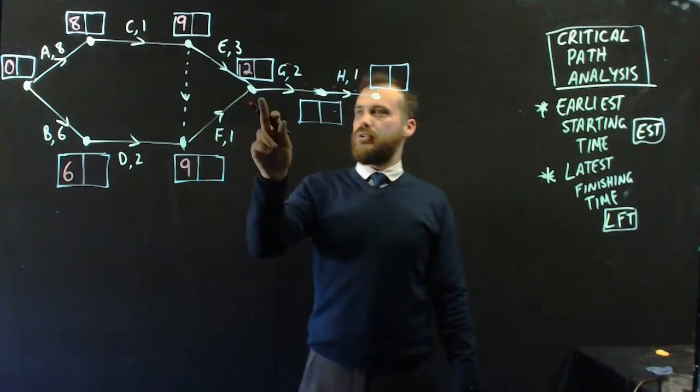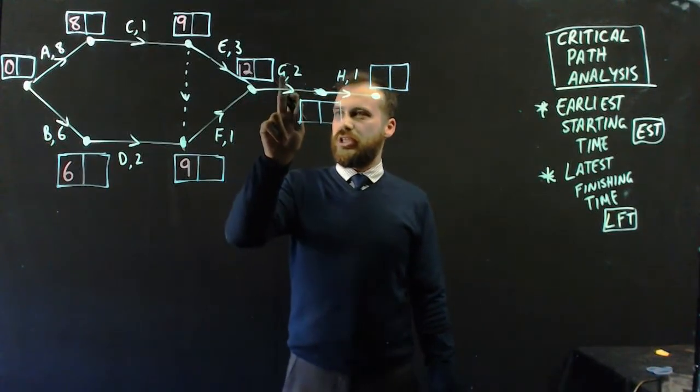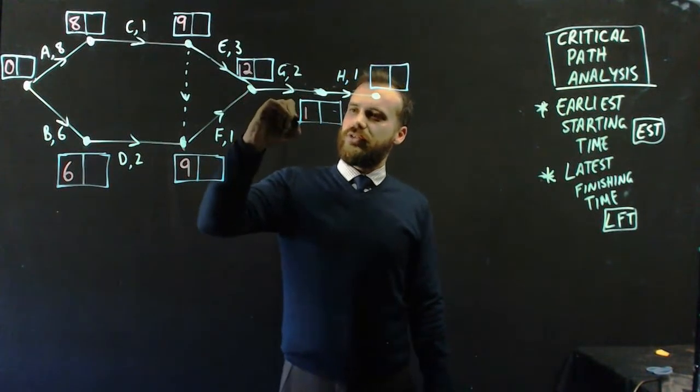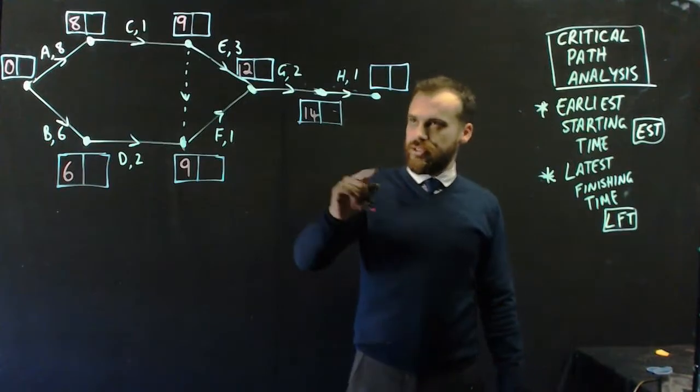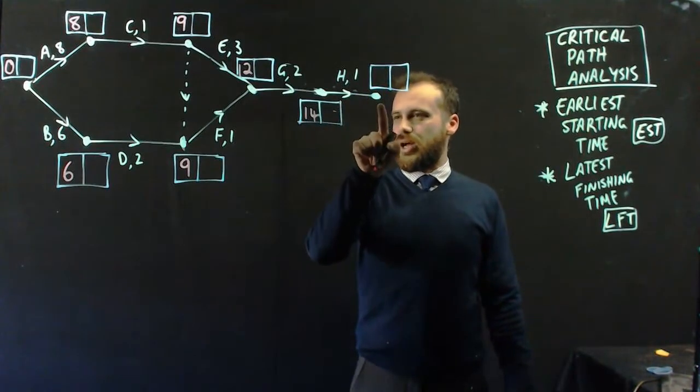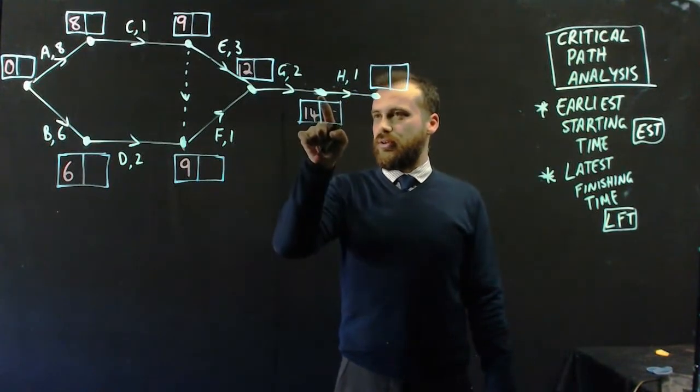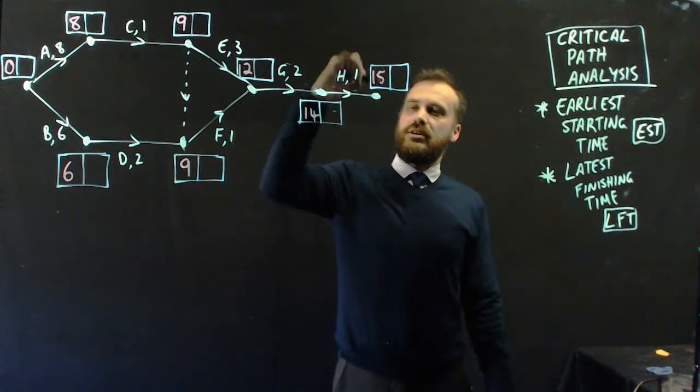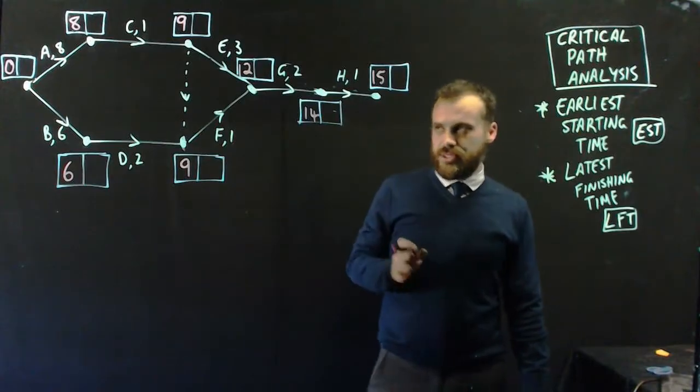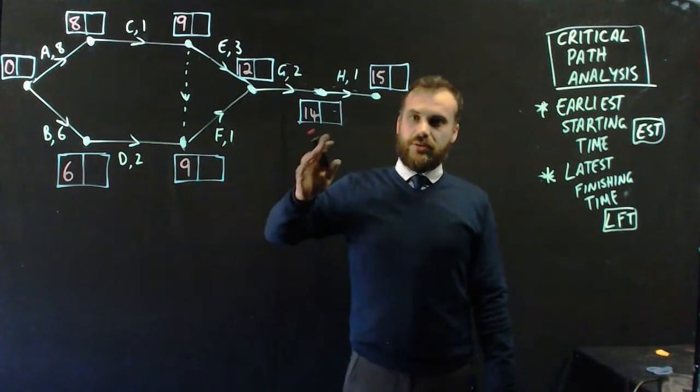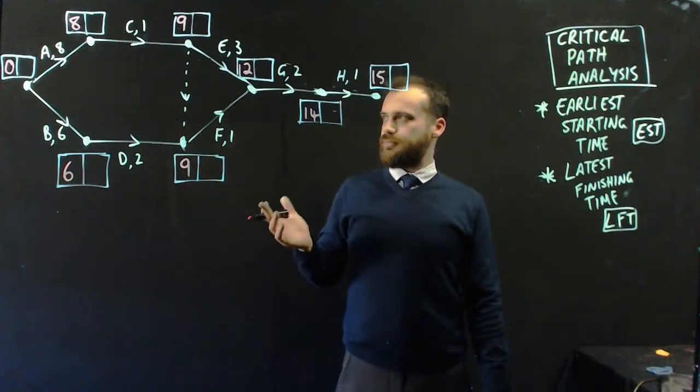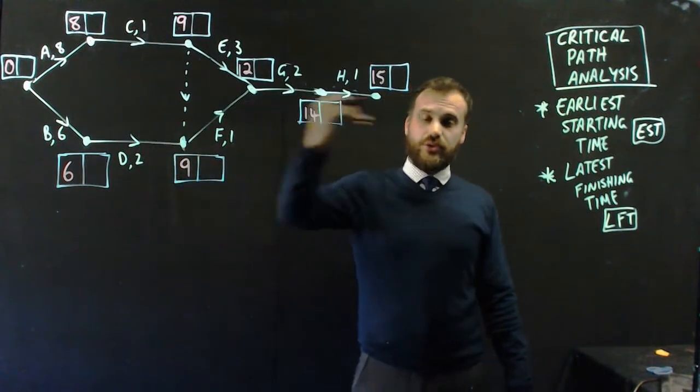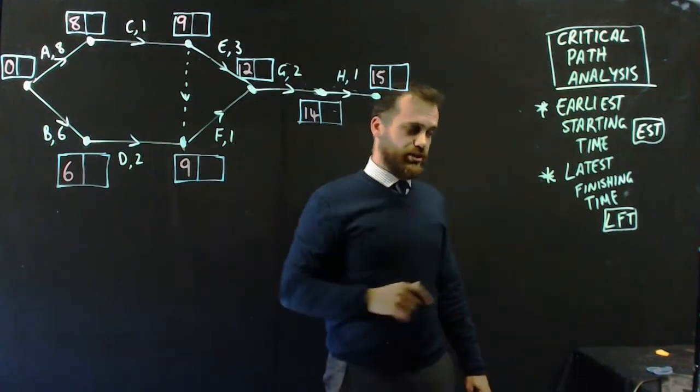From here, it's going to be really straightforward. H can't start until G has finished. It took twelve hours to start G. G took two hours. So that's fourteen. And finally, it takes one hour to do H. H can't start until this has happened, which took fourteen hours. So it's going to take fifteen full hours to finish this activity. Whatever it is. That is forward scanning. I scanned forward through the network to find the earliest starting times.